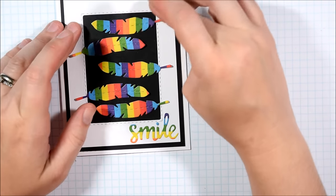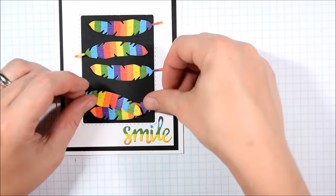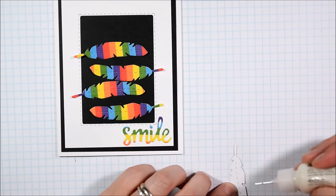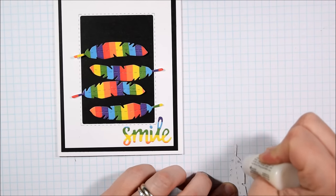When I glue on something that's quite small and fine detailed like the smile sentiment, I really find that that quill tip on top of my multimedia mat comes in handy.